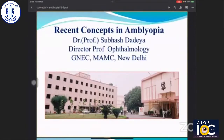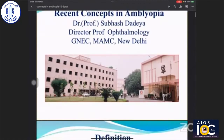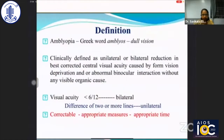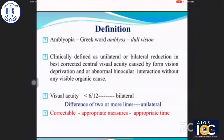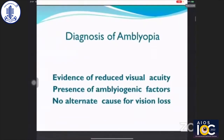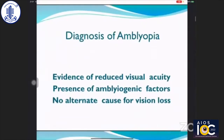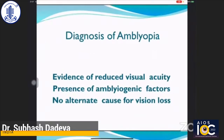Thank you, Dr. Rohit, for a nice introduction. Thanks to AIIMS and EPOS. All of us are well aware about the definition of amblyopia. It is correctable if appropriate measures are applied at the appropriate time — that is very important. For diagnosis of amblyopia: evidence of reduced visual acuity, presence of amblyogenic factors, and there should not be any alternate cause for the loss of vision.